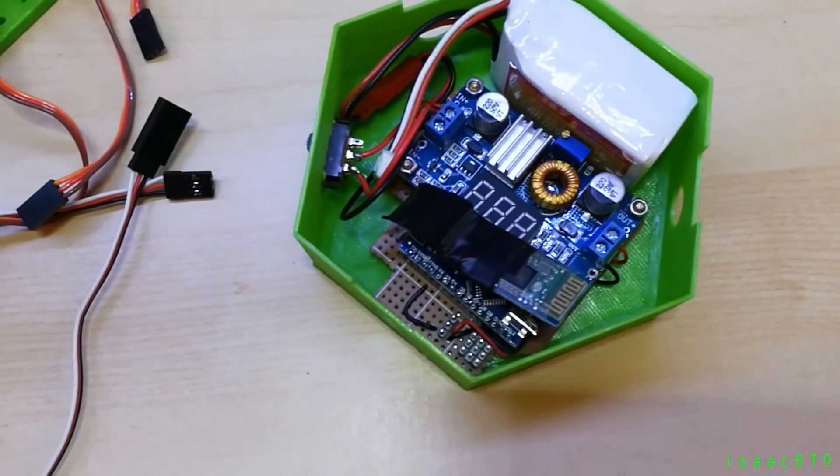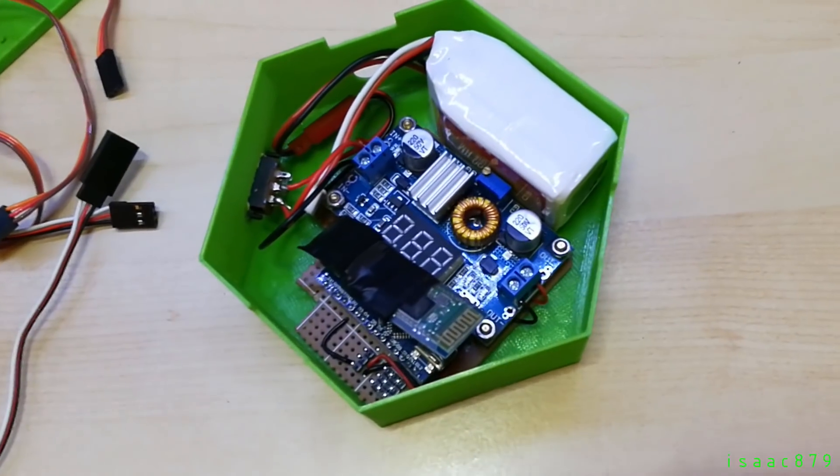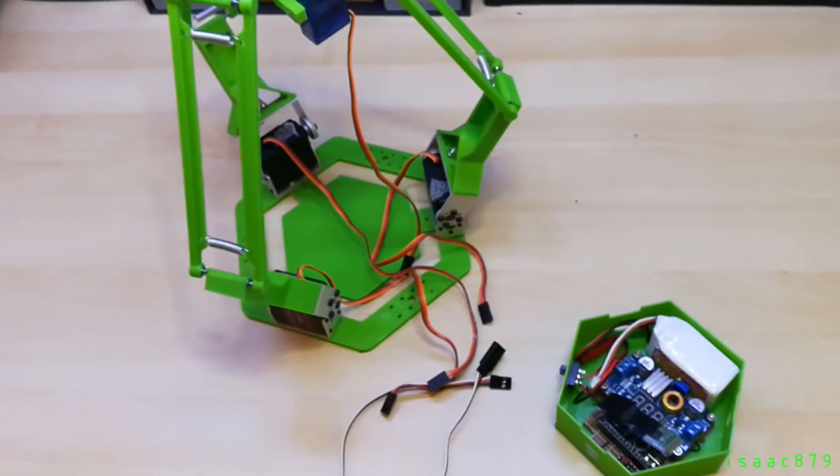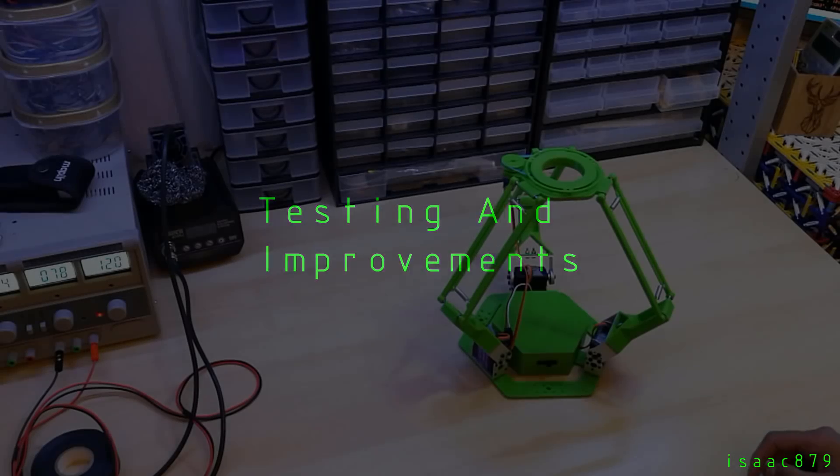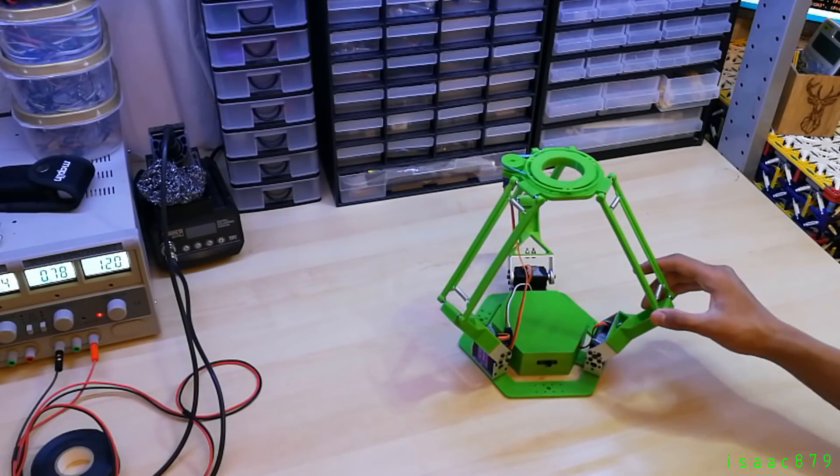I've managed to jam all the components in the components cover, so now all I have to do is attach the servos and then test if the Delta robot works. Let's switch it on and see what happens.